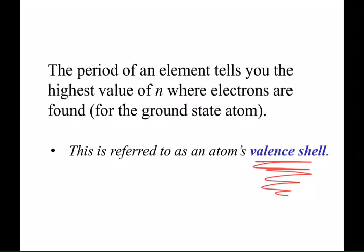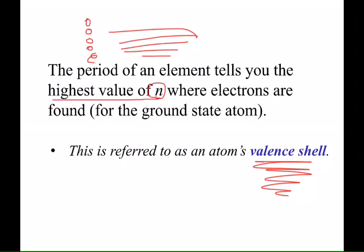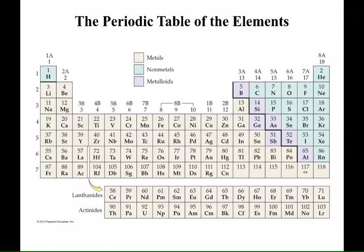You know where the valence electrons are if you find the element on the periodic table. One of the things we talked about is these rows going across—we call those periods. If you look at the period that an element is in, you know where the valence electrons are, and that will be the highest n for where the electrons are hanging out. I brought in a periodic table. You don't have this in your notes, but you had it earlier. These numbers I'm circling here are the periods.